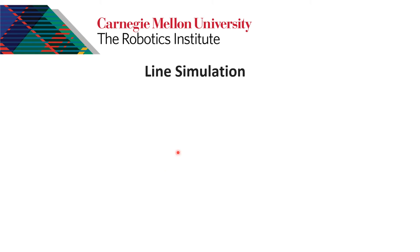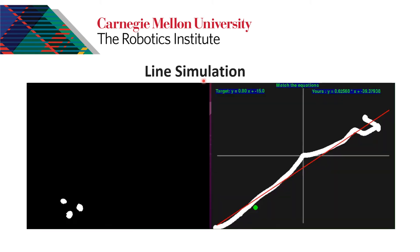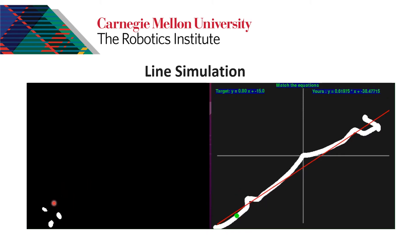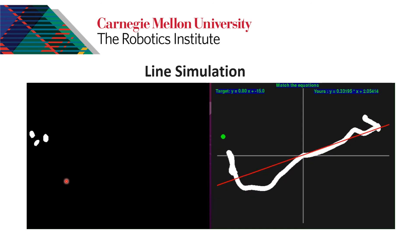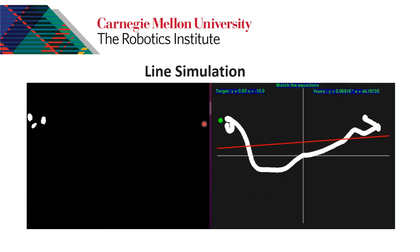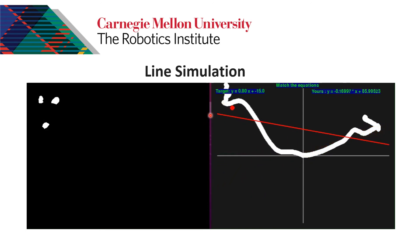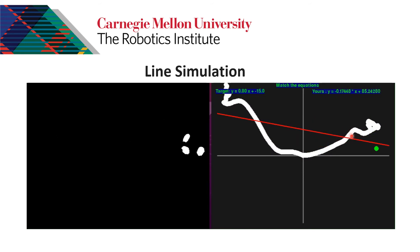Now let's talk about one of the two simulations: the line alignment simulation. On the left side we see three white dots representing the fingertips — these are the fingertips of a real glove that I simulated. When we close the hand, the red dot changes its color to a green dot.